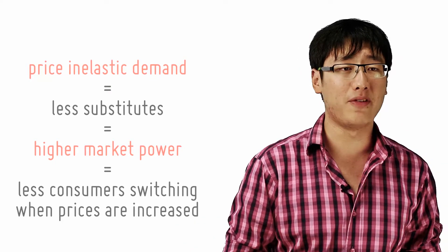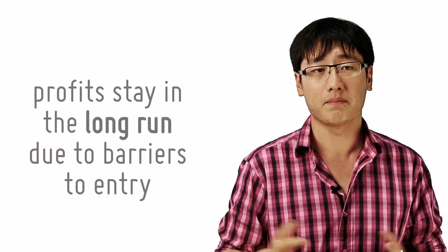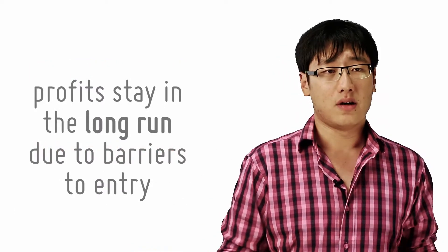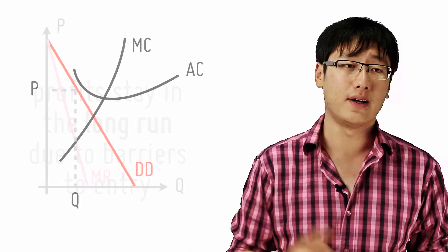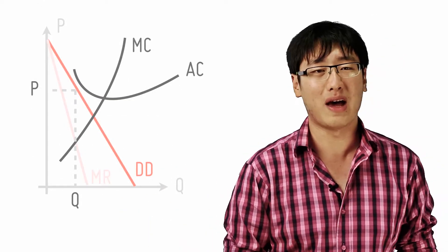Now in the long run, the supernormal profit will not be competed away. Is it possible for the monopoly to make losses? Of course, when you draw the graph like this, you can make a loss. Of course, good monopolies don't allow that to happen.